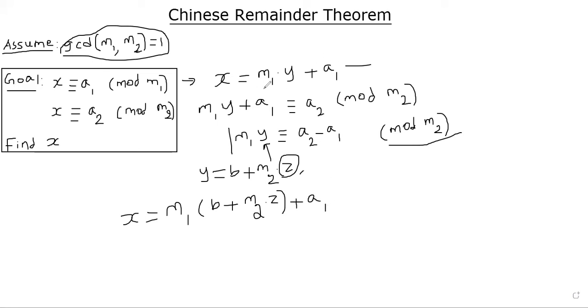So I'm just substituting it here, which means I will rewrite it as A1 plus. So this is what is this now I wrote x as A1 plus M1 b plus M1 M2 z, which means by the definition of congruence, we can just say x is congruent to A1 plus M1 b mod M1 M2. So we found the solution.